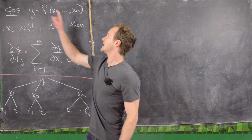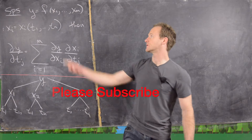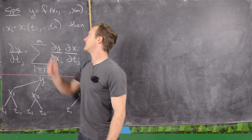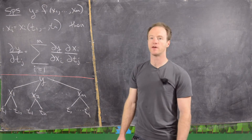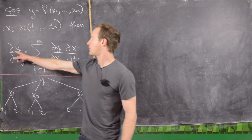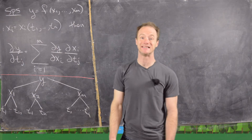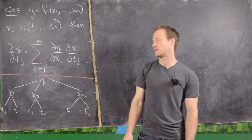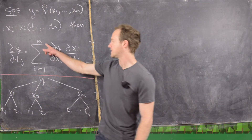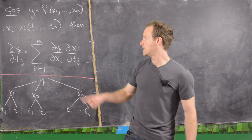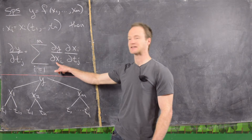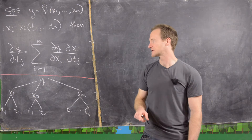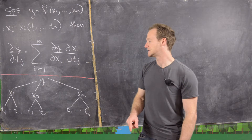Let's suppose that y is a function of m variables, so it's f of x1 through xm, and then each xi is a function of n variables, t1 through tn. Then the partial derivative of the dependent variable with respect to one of the independent variables, tj in this case, will be the sum from i equal 1 to m of the partial of y with respect to the intermediate variable xi times the partial derivative of xi with respect to tj.